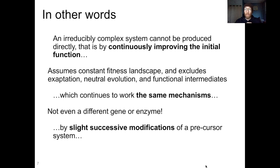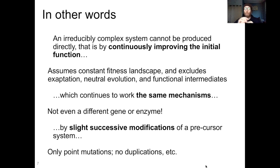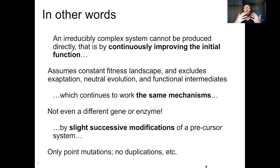"By slight successive modifications of a precursor system." He doesn't come out and say it, but what he's strongly implying here is you're only considering single base point mutations — changing one base into another in the DNA. But we're excluding from consideration, by "slight successive modifications," things like gene duplications and other large-scale changes to the DNA, and we know that those types of changes are the sources of variation that can then be selected for.